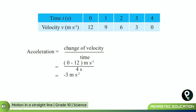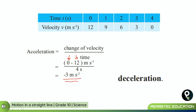In another example, the final velocity is 0 and the initial velocity is 12, divided by 4 seconds. In this case, the answer is minus 3 meters per second squared. When acceleration is negative, it means the object has slowed down — the acceleration is in the opposite direction. There is a name for this: deceleration. Opposite to acceleration is deceleration. That is how easy it is to find acceleration and deceleration when velocity and time are given.